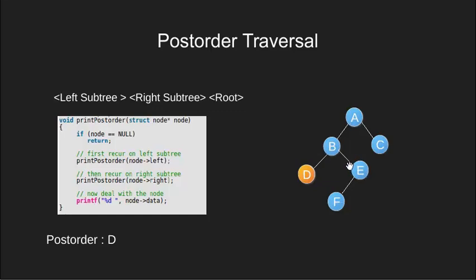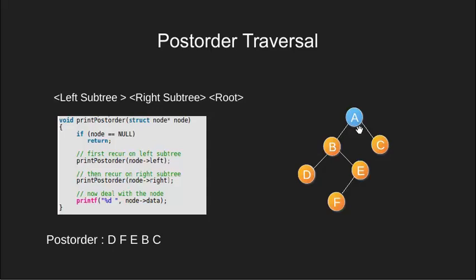We now traverse the right subtree of B. We come to E and go to its left subtree — we reach F. Since left and right of F are null, we print it. We move back to E and since right is absent, we print node E. We move to B and since left and right subtrees of B are covered, we print it and move back to A. Now the left subtree of A is done and we need to traverse its right subtree. We go to C — its left and right are absent, so we print it and move back to A. The left and right subtrees of A have been traversed, so now we print it too, and with this our recursion stops.